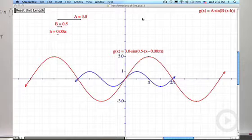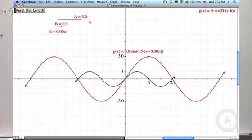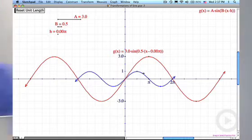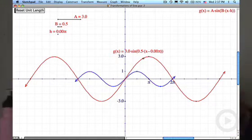Here we are looking at Geometer's Sketchpad, and I've got my equation g of x equals a times the sine of b times the quantity x minus h. I have sliders over here that allow me to control the values of a, b, and h. And here's my graphs of, first of all, the sine graph, and second of all, the transformed sine graph.